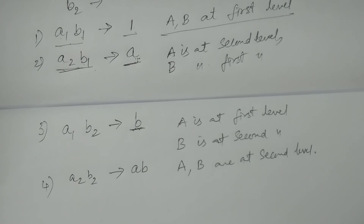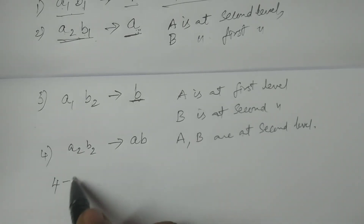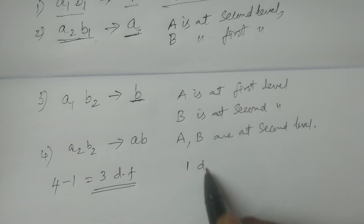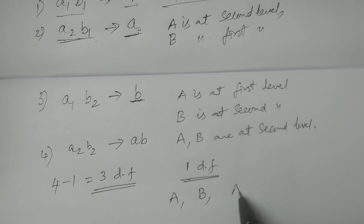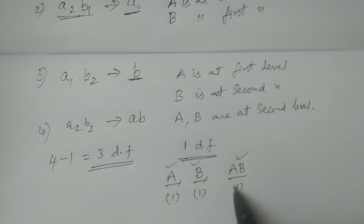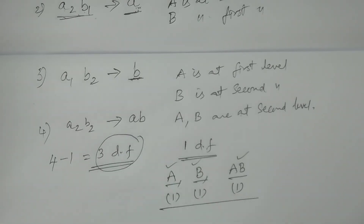Now consider the degrees of freedom. If we consider the four treatment combinations using RBD or LSD — randomized block design or Latin square design — then we have four minus one, that is three degrees of freedom. In the 2 square factorial experiment, this three degrees of freedom is split into one degree of freedom each for factor A, factor B, and the interaction effect AB.